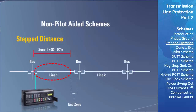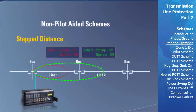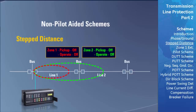The second zone of protection is set to overreach and extends from the beginning of the transmission line past its end and into the next adjoining line. Zone 2 is usually set to 120 percent of the impedance of the transmission line so it can detect faults in the end zone area that zone 1 cannot detect. Zone 2 is always programmed to have a time delay set between 0.25 and 0.4 seconds. Together, zone 1 and zone 2 have the ability to protect the entire length of the transmission line.